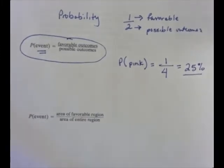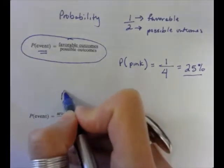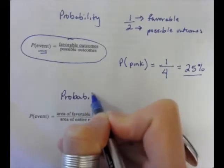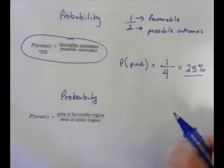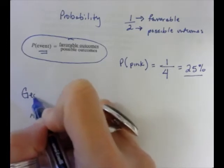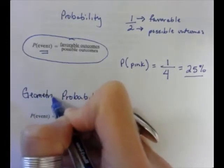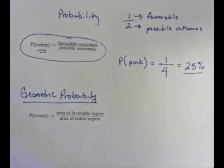So we're going to move this on to area and geometry. So the next thing we're going to learn is called geometric probability. And what does that mean? That means we're going to look at specific shapes, and we're going to say, for all intents and purposes, what are my favorable outcomes, and what's the favorable region versus the entire region. So that's what geometric probability is.